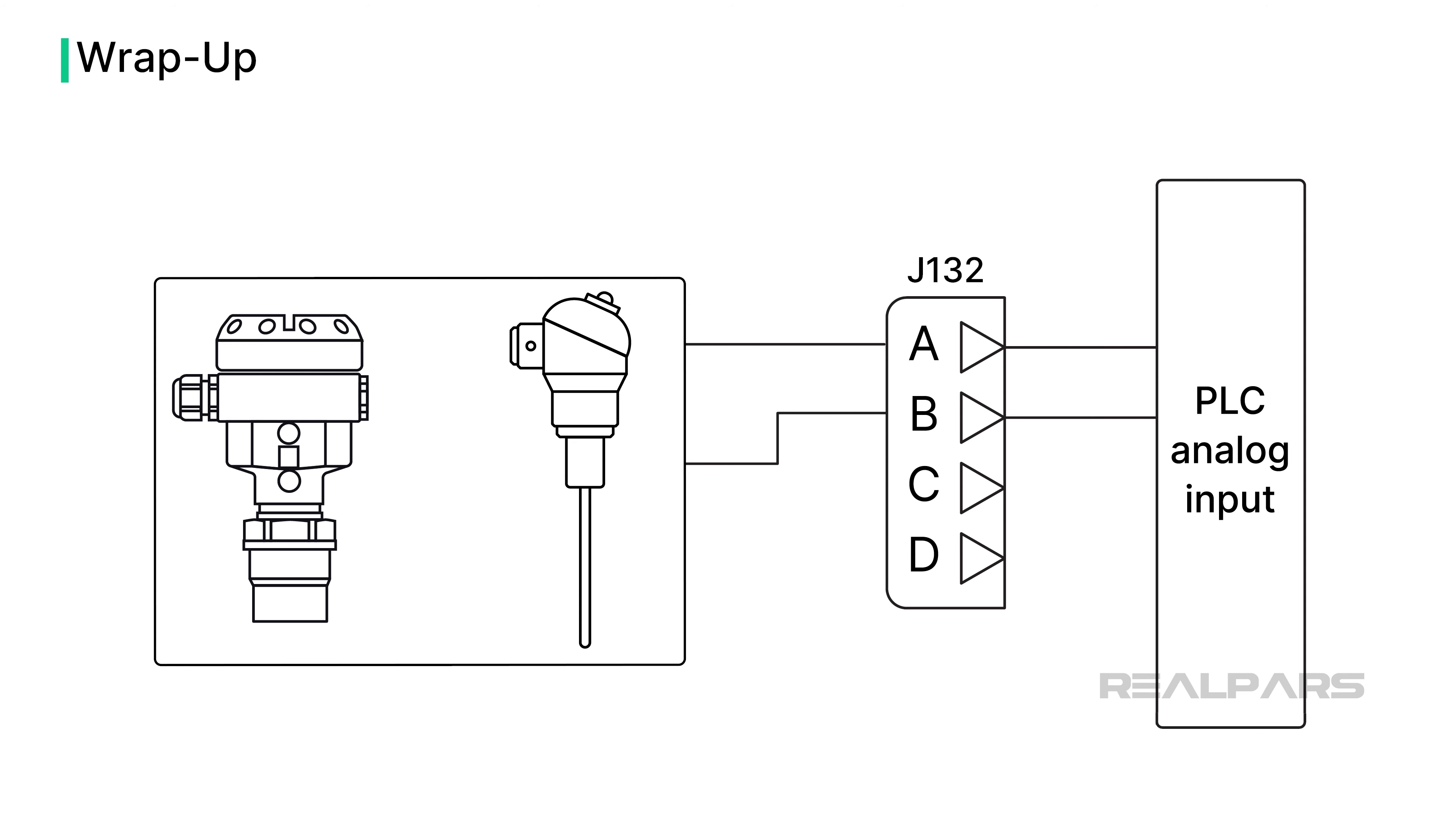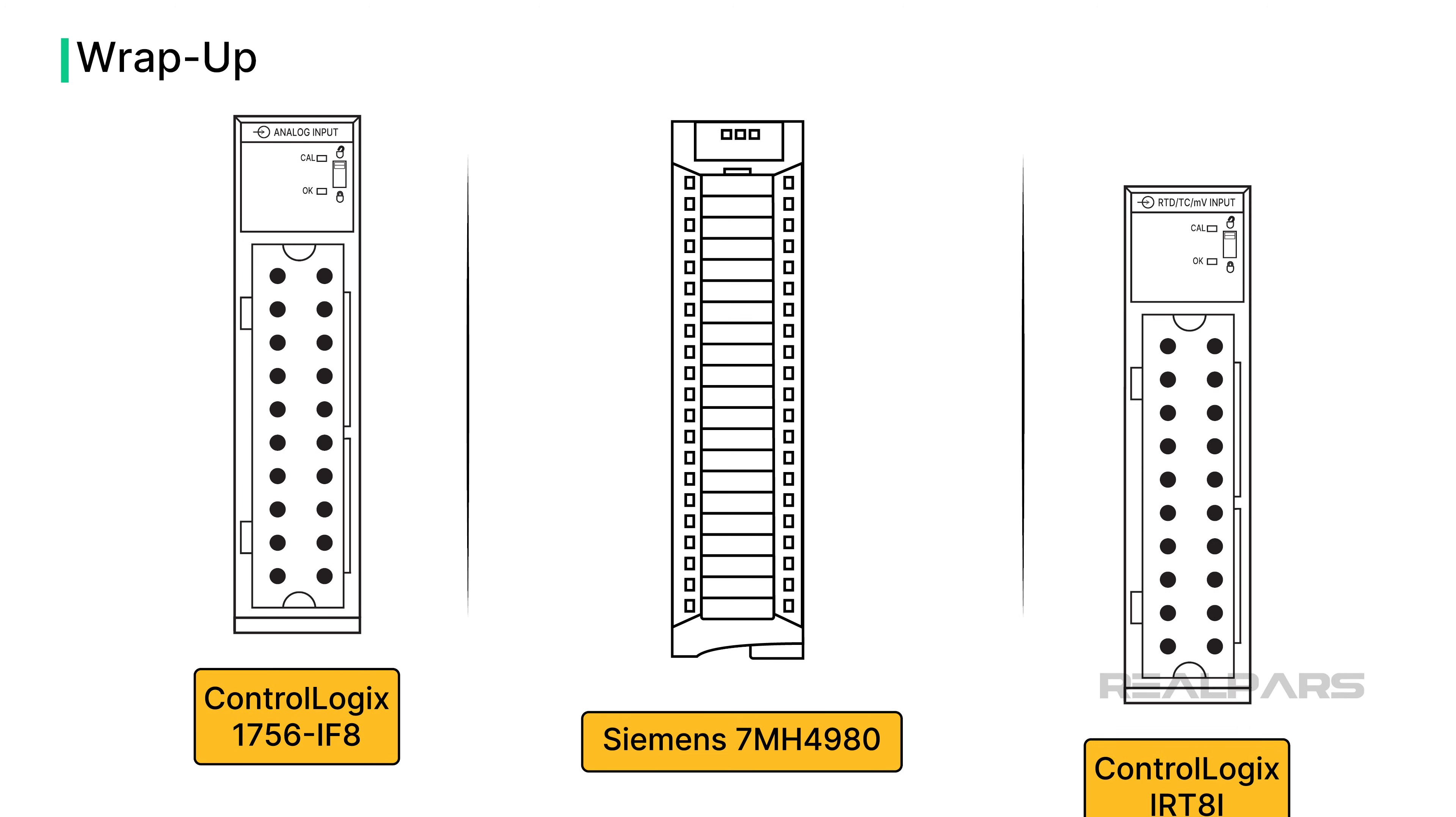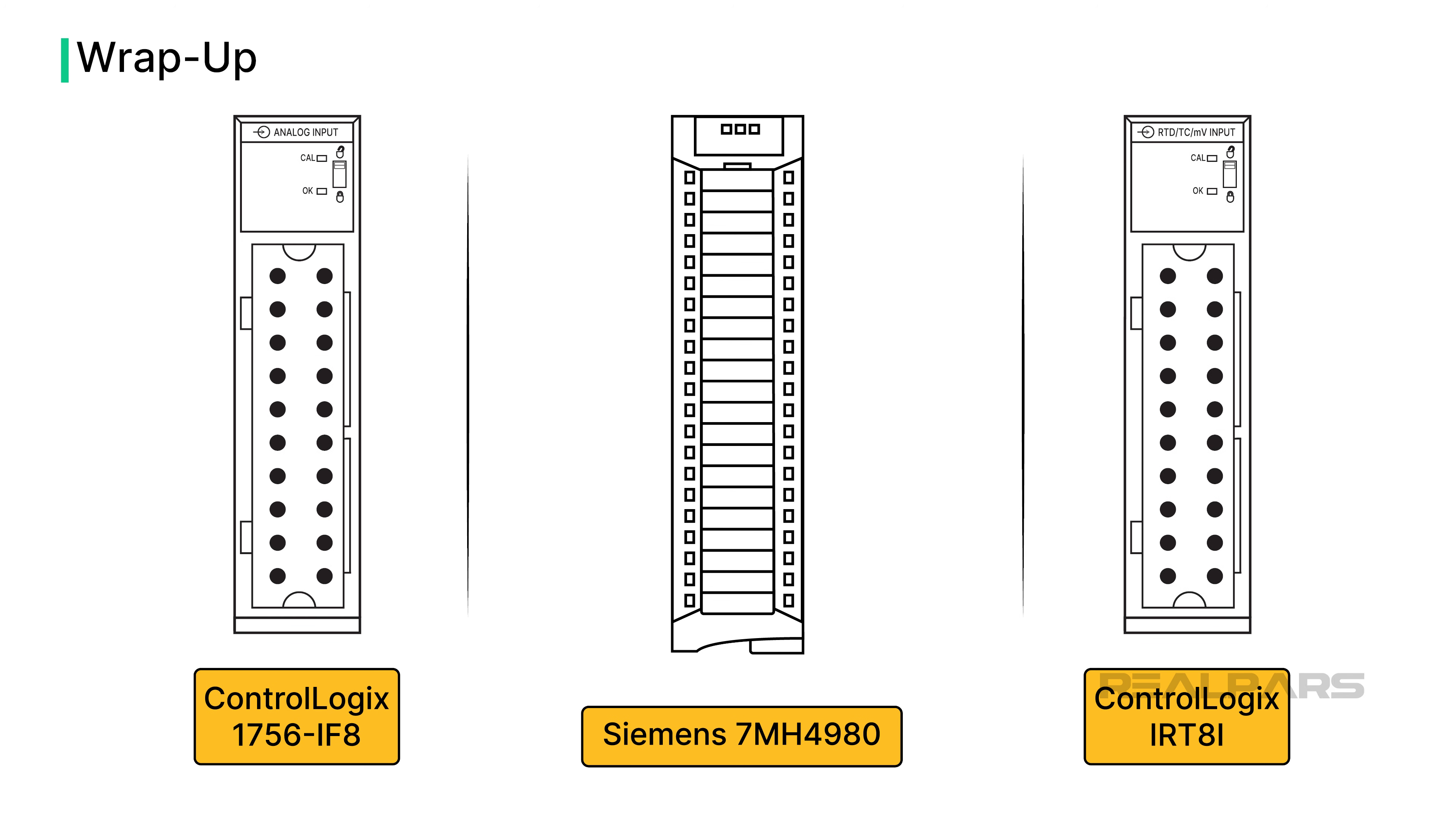Typical analog voltage signals include 1 to 5 volts, 0 to 10 volts, and negative 10 to positive 10 volts. The most commonly used analog signal is a 4 to 20 milliamp current. PLC module vendors offer analog input modules that can be used in multiple process variable loops.